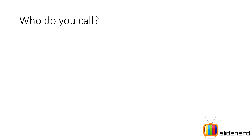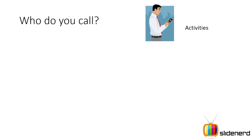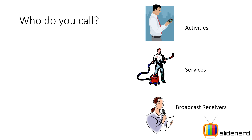Basically, you have three things that work with intents. If you want to call somebody, it can be either an activity, a service, or a broadcast receiver. Activities and services come under one category and broadcast receivers come under a separate category. You can call any one of them using an intent object. There are methods like startActivity, startActivityForResult, startService, bindService, sendBroadcast, sendOrderedBroadcast, sendStickyBroadcast, and others. I will talk about these methods in detail later.